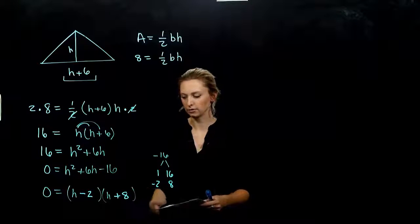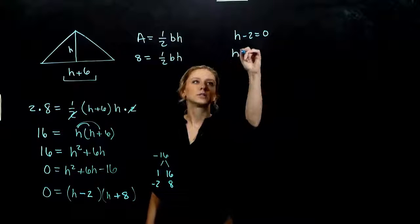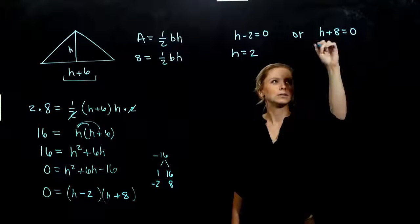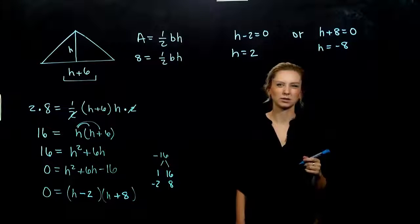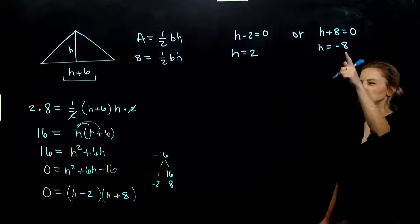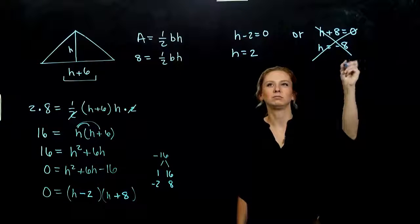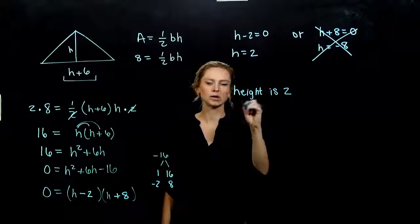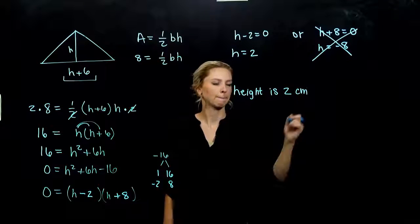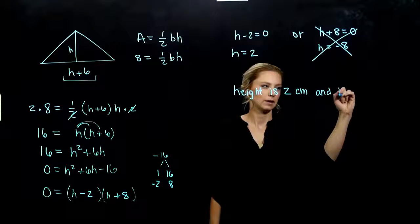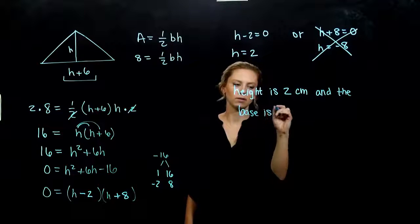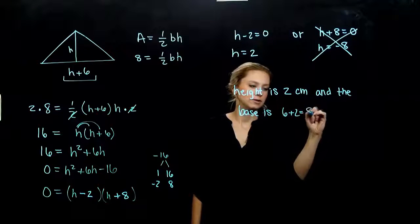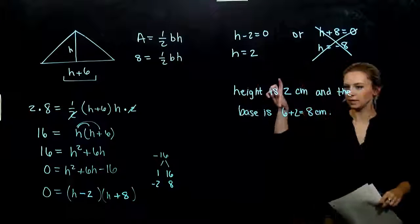Two things being multiplied equal to zero: either (h − 2) = 0, giving height = 2, or (h + 8) = 0, giving h = −8. We rule out negative height since it doesn't make physical sense. So the height of the triangle is 2 centimeters. The base is 6 centimeters longer than the height: 6 + 2 = 8 centimeters.